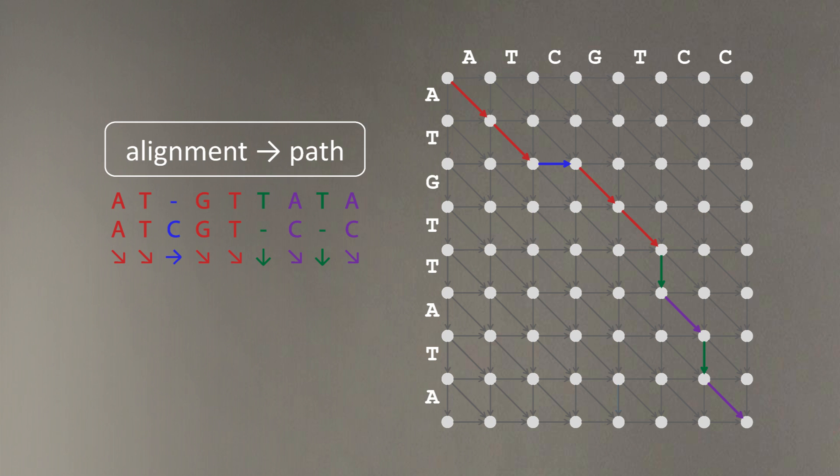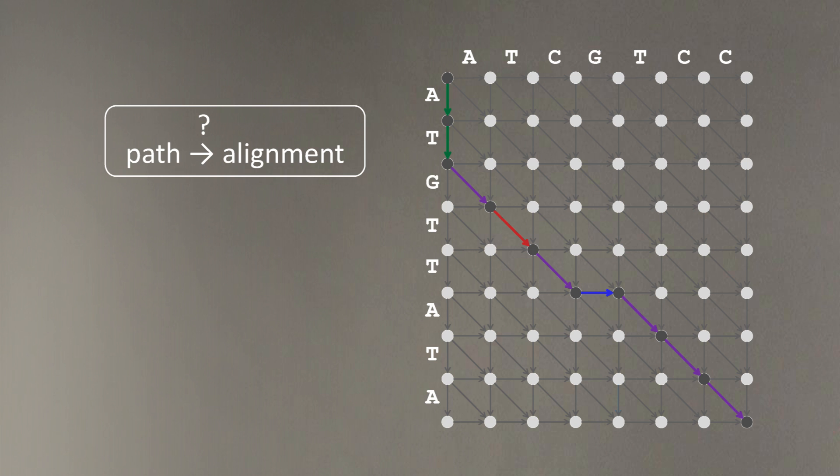Now, let's ask a reverse question. If we have a path in Manhattan grid, would we be able to construct the alignment matrix? Let's try. This is an arbitrary path in the alignment grid. Let's combine all the arrows in one place. And, as soon as we've done it, of course, we can construct the alignment matrix, as I showed here.